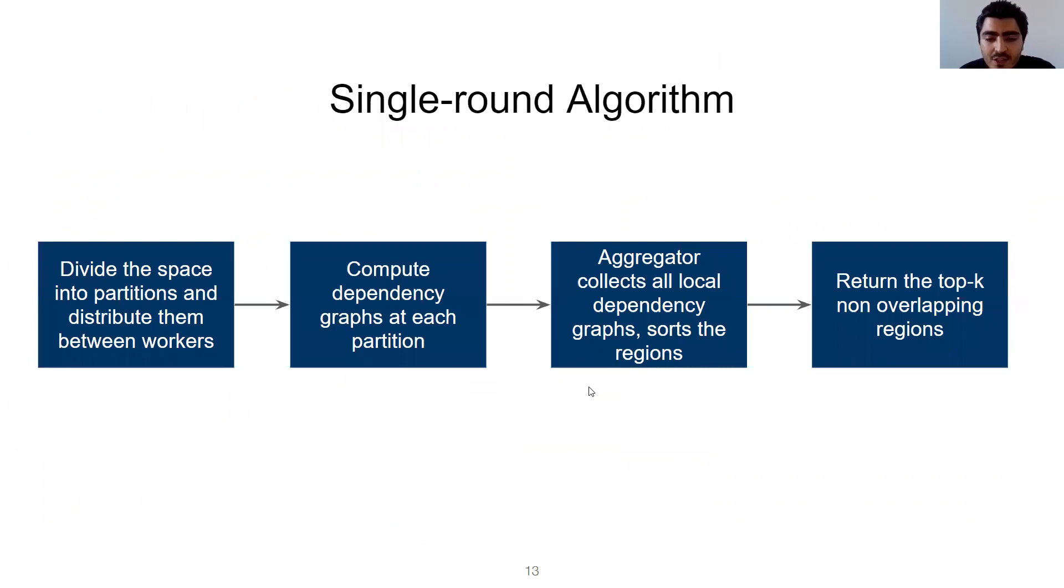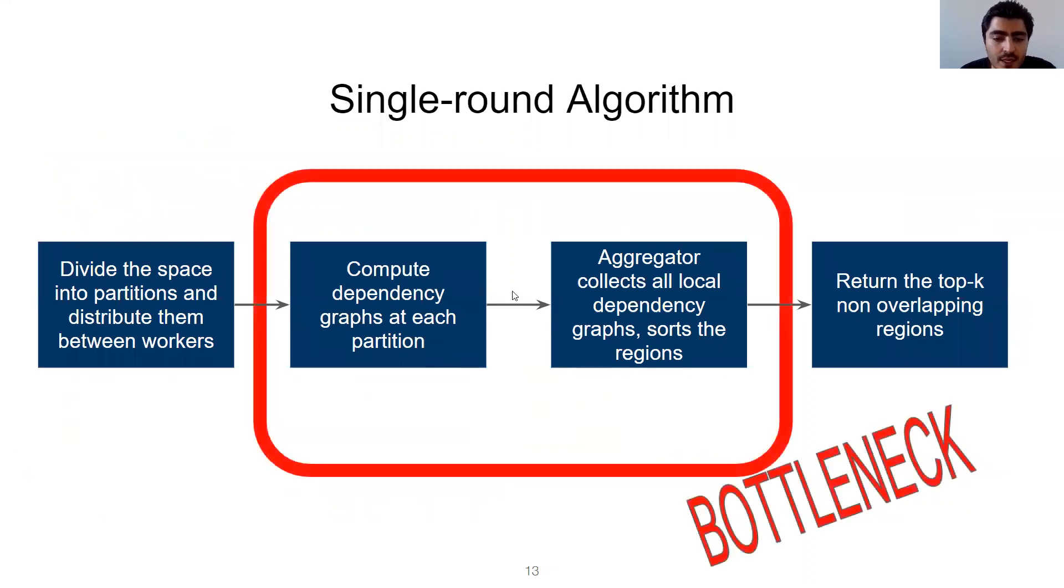Here is a visual description of the step we illustrated in the previous slide. The algorithm is guaranteed to finish in a single round and it's faster than the multi-round algorithm. However, these two steps, the local computation and aggregation of the dependency graph, can sometimes still take longer than the multi-round algorithm.